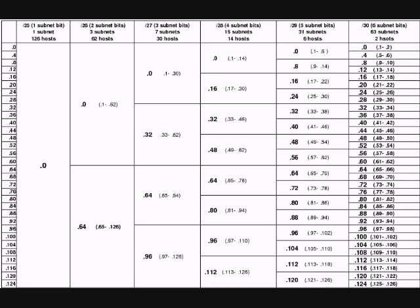Key here though is that your networks need to be contiguous. By that I mean if I have these subnets on my network and I have this subnet on my network, I can combine them into one advertisement. And that advertisement is this one here, so it basically is going to be an advertisement for both of those.